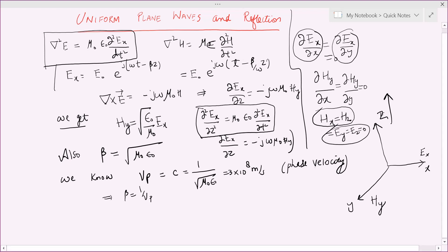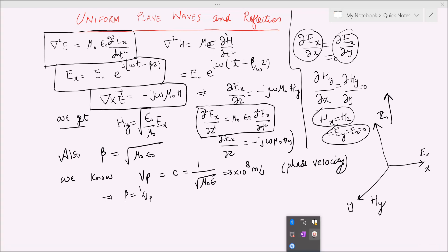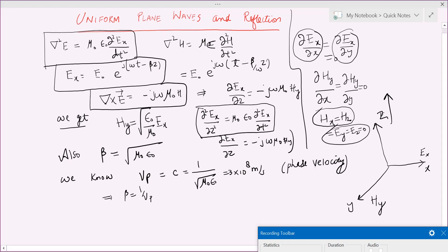Whose solution can be written as complex exponential form, with omega as the circular frequency and beta as the phase constant. We also have this relationship from the Maxwell equations, so using this relationship we get one more equation.